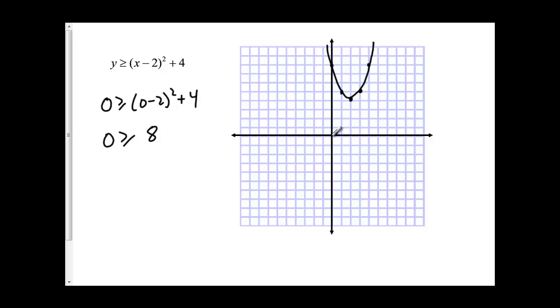So my test point is here. That means I need to shade the side of the parabola that is not part of the test point. So in this case, that's the part in here.